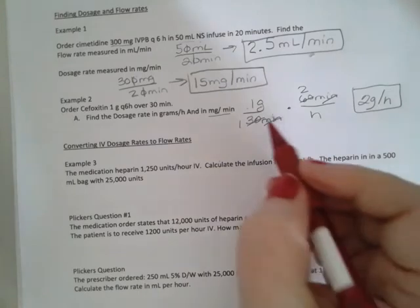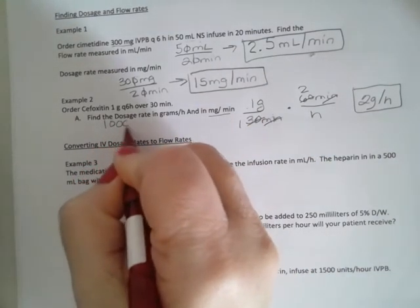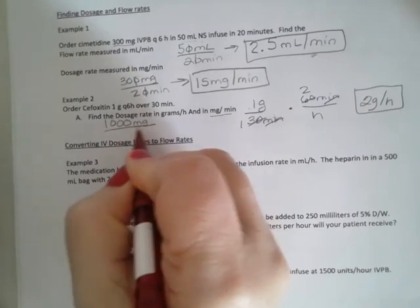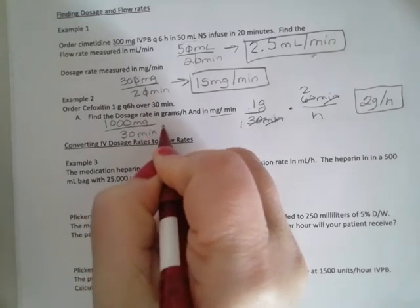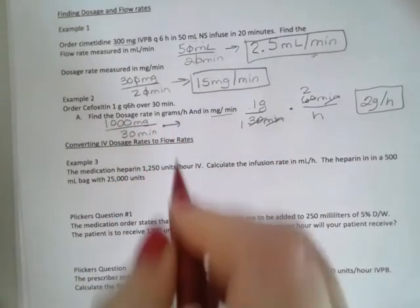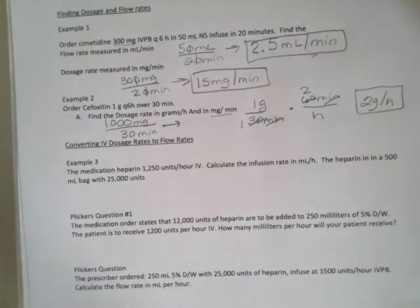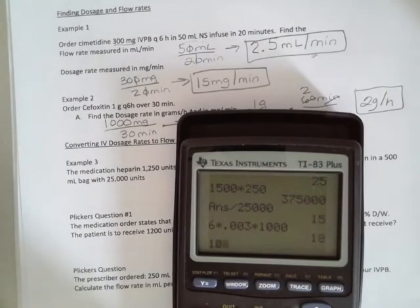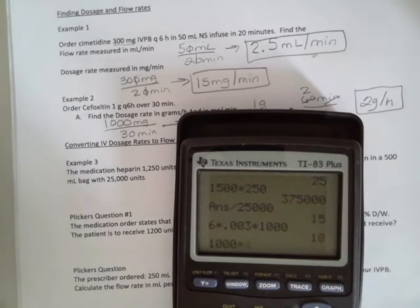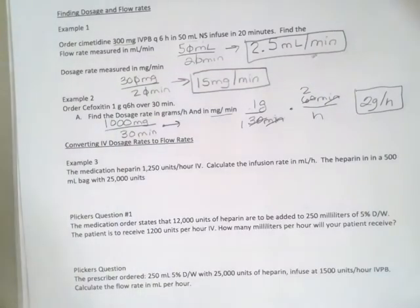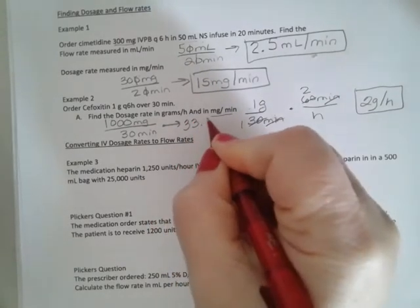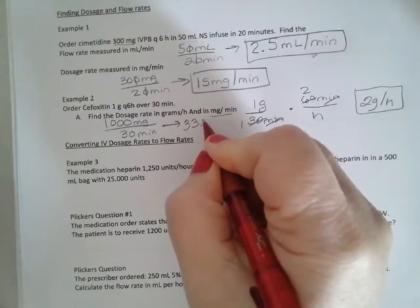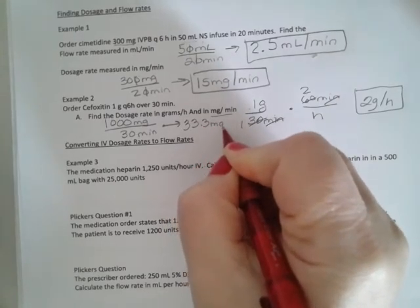Now we're also asking for milligrams per minute. To do this, I'm going to change my one gram to 1000 milligrams in 30 minutes. And that I just divide because now I have milligrams per minute. So I'm going to take my 1000 milligrams divided by my 30 minutes. And I get 33 and a third. And it depends upon where or how they want you to round milligrams per minute.